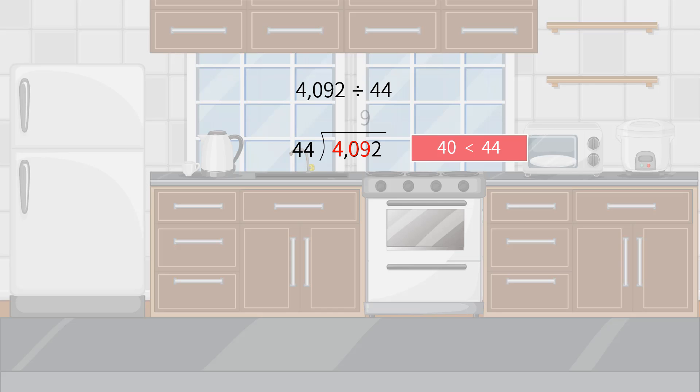We can guess it is 9. After making an estimation, we again calculate the multiple of the divisor and partial quotient. It is 396.